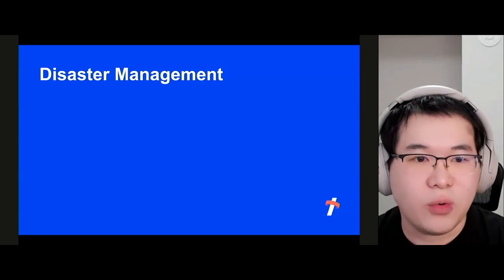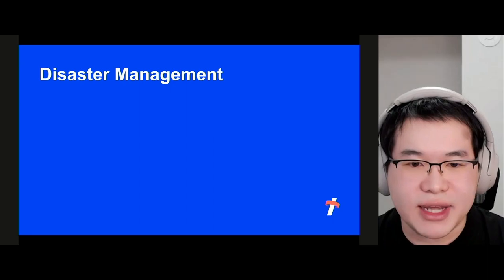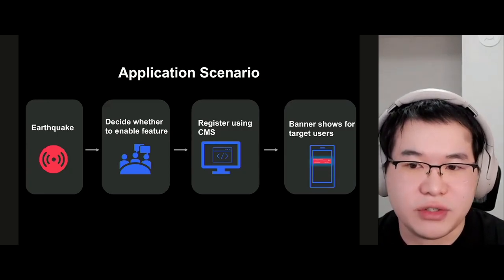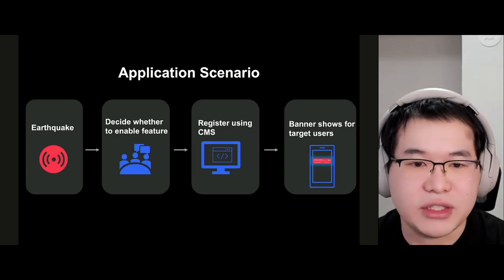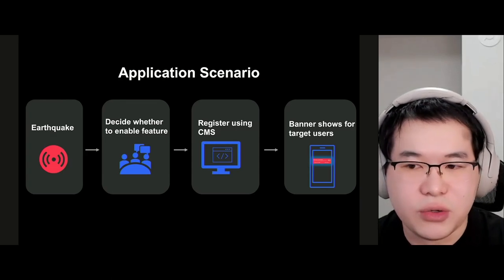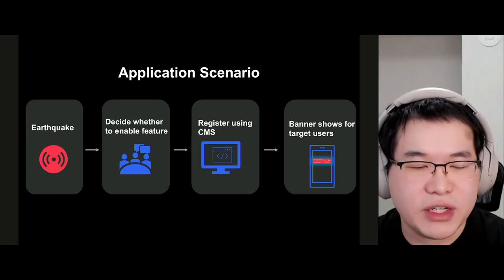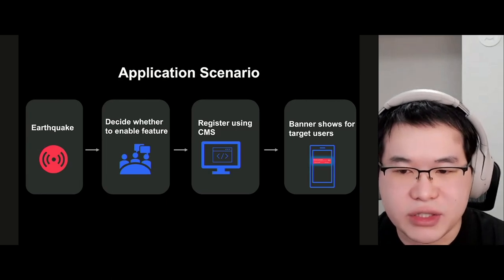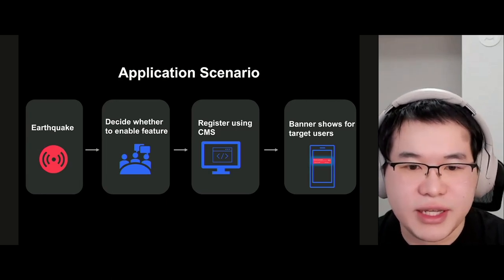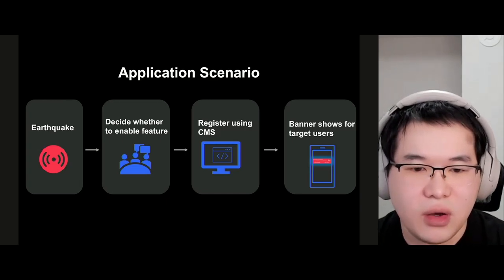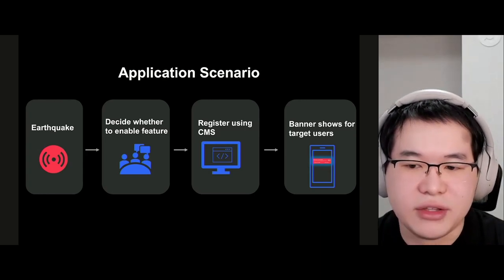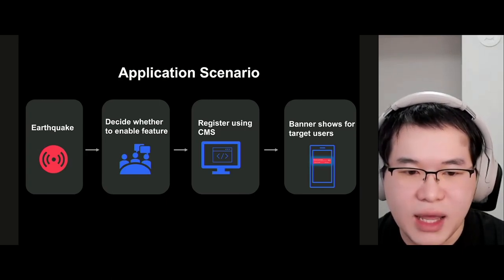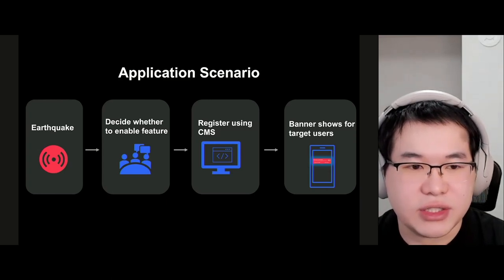Let's start with disaster management. This is the common case when we decide to enable this feature. When a disaster occurs, such as an earthquake, one of our teams — usually the planning team — will discuss whether to enable the feature based on the level of the disaster and the affected areas. If the answer is yes, our operator will register disasters using our content management system, CMS, which allows adding new disasters to the database. We also use the CMS to enable disasters and send notifications to target users, after which a banner is displayed.